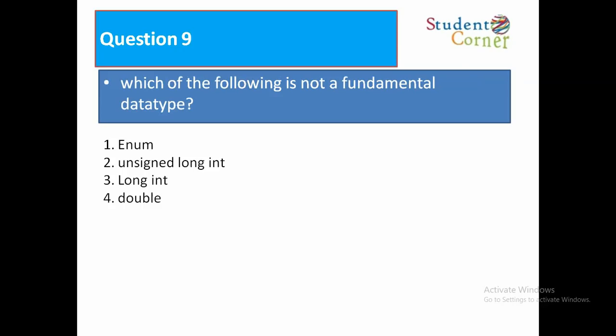Question number nine: Which of the following is not a fundamental data type? Option one: enum, option two: unsigned long int, option three: long int, option four: double. So the answer is enum. The reason is the primitive data types are integer, float, character, and void, which is the primitive data type.